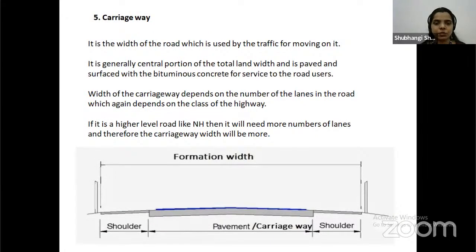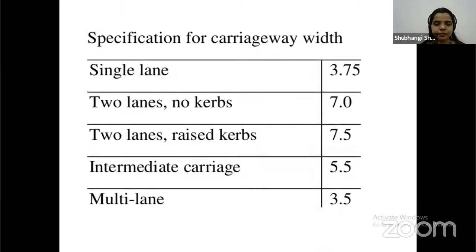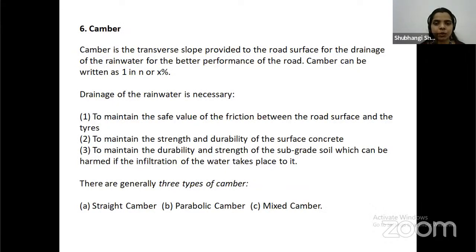Carriageway is the width of road used by traffic for moving on it. It is generally the central portion of the road lane width, paved and surfaced with bituminous concrete for service of road users. Width of the carriageway depends on the number of lanes in the road, which depends on the class of highway. For a higher-level road like a National Highway, it will need more lanes and therefore the carriageway width will be more. Specifications: single lane 3.75 meters, two lanes no curbs 7 meters, two lanes raised 7.5 meters, intermediate lanes 5.5 meters, multi-lane 3.5 meters per lane.